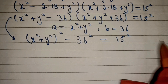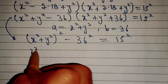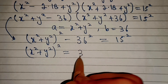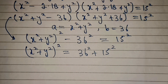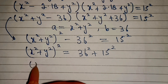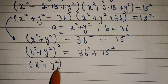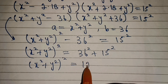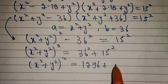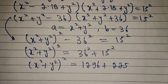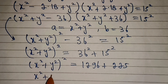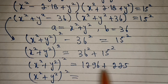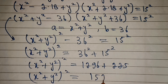Now move minus 36 squared to the right-hand side. So (x squared plus y squared) whole squared equals 36 squared plus 15 squared. That is 1296 plus 225. Adding these two we get 1521.